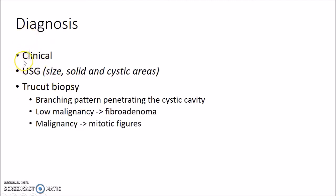How do you diagnose Phyllodes Tumor? It is basically a clinical diagnosis. You can do ultrasonography to confirm the size of the tumor and to find out solid and cystic areas. True cut biopsy can be done. Histology reveals a branching pattern penetrating the cystic cavity — it is called leaf-like because of this branching pattern which resembles a leaf. In case of benign Phyllodes Tumor it will resemble a fibroadenoma, whereas malignant Phyllodes Tumor shows mitotic figures.